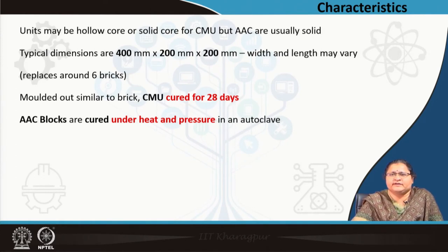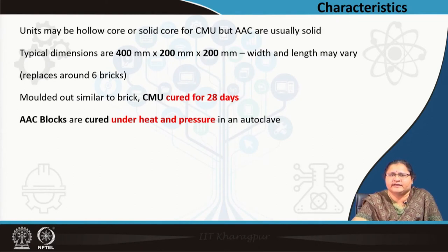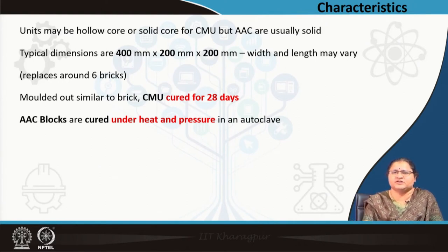Brick was a molded unit that went into burning, but CMU is made mostly of cement requiring hydration for strength gain, and it is to be cured for 28 days. Whereas AAC blocks — the two A's stand for 'aerated' and 'autoclaved' — are cured under heat and pressure in an autoclave. This is the major difference, and the composition is also quite different from the CMU.